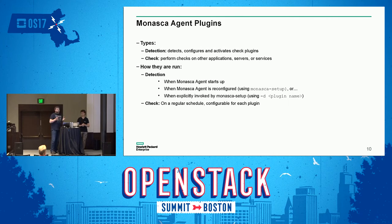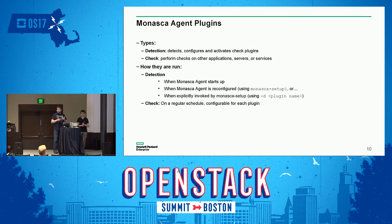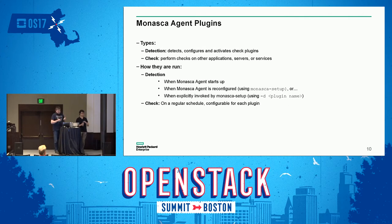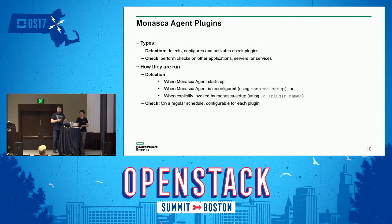Checks can come in two pieces: the detection and the check. The check is what actually reaches out to the thing being monitored and gathers information for Monasca. It can optionally have a detection component, which essentially configures the check — it performs initial testing, verifies configuration, and writes a configuration file that the check plugin then uses. Detection is only run at startup or reconfiguration; the check is run by the collector component on a regular basis.